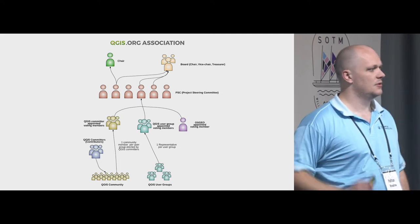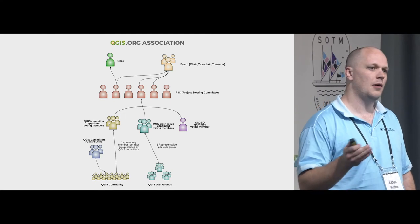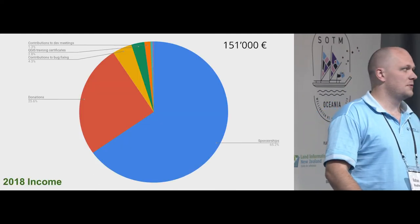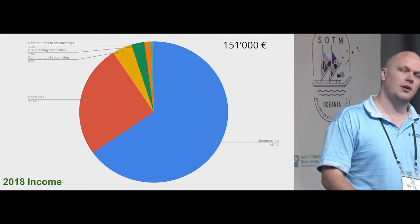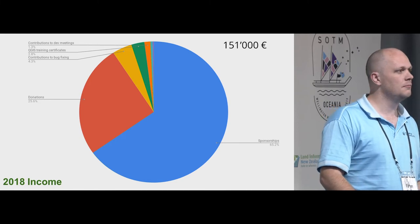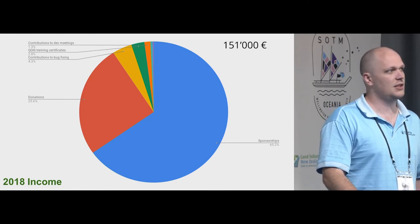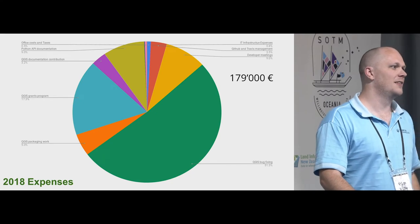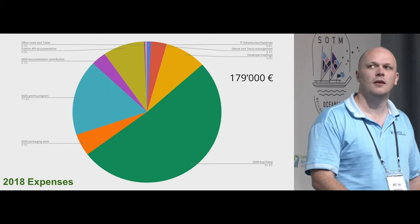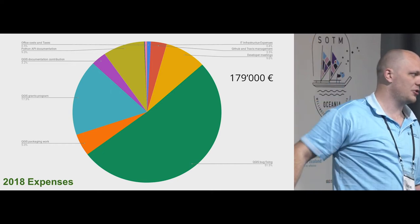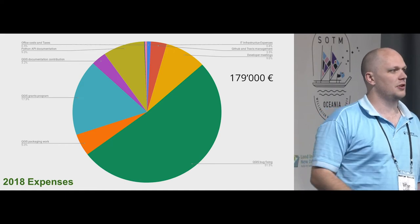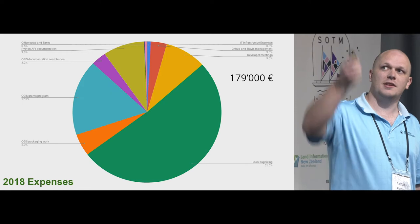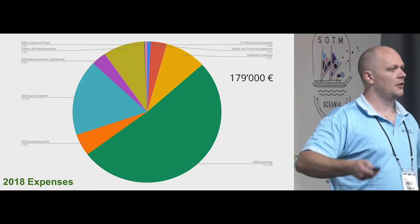A board was established with voting members that rotate through to keep burnout low — if you're not comfortable in that role, you can bail out. We also have quite a substantial income compared to a lot of other projects. 2018's income was €150,000 — we are quite privileged to have that amount of money, which has come from sponsorship and donations. There's a massive chunk of expenses going to bug fixing, because the project invests money back into itself to fix bugs since people expect stability.